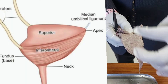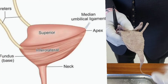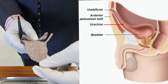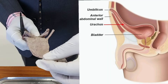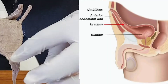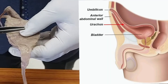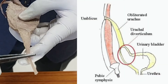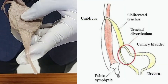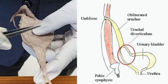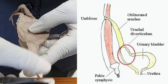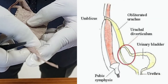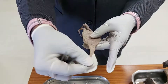The median umbilical fold is a fold of peritoneum, and the median umbilical ligament is a remnant of the urachus. The urachus is a part of the hindgut. If the urachus persists, urine may flow from the bladder up to the umbilicus and drip from there — this is called a patent urachus. Normally, the urachus is obliterated to form the median umbilical ligament.